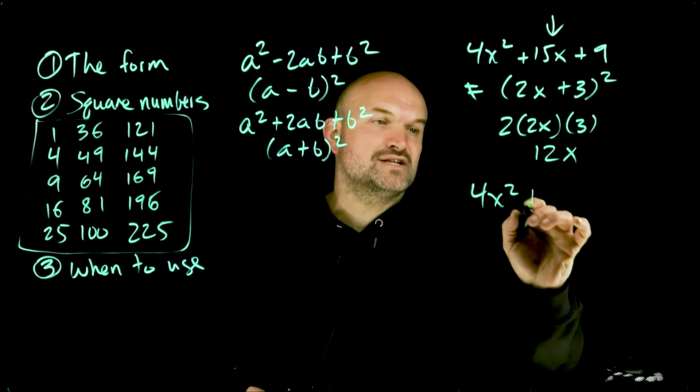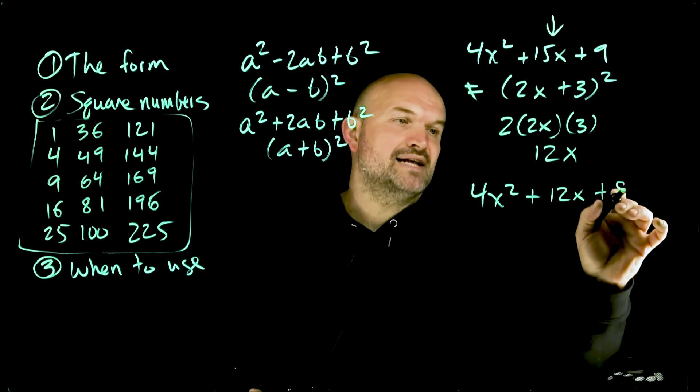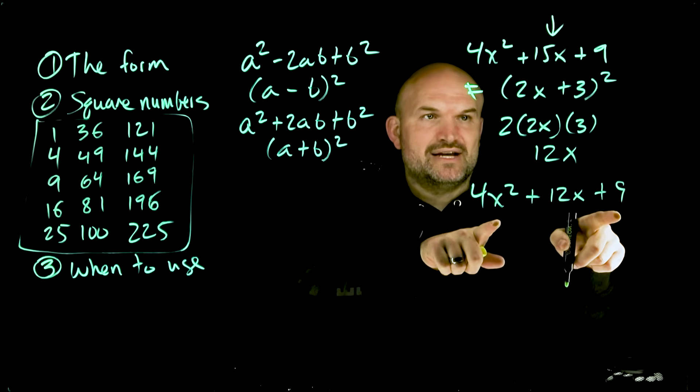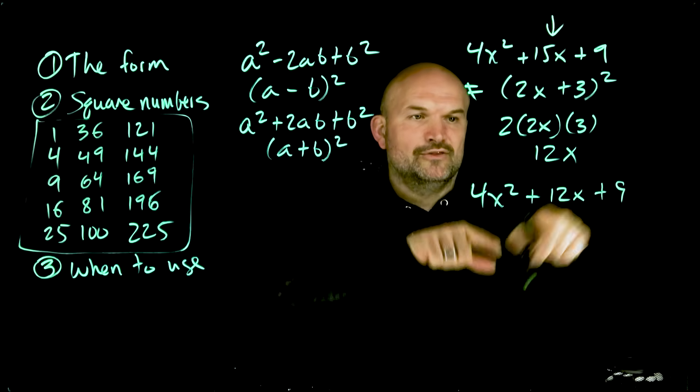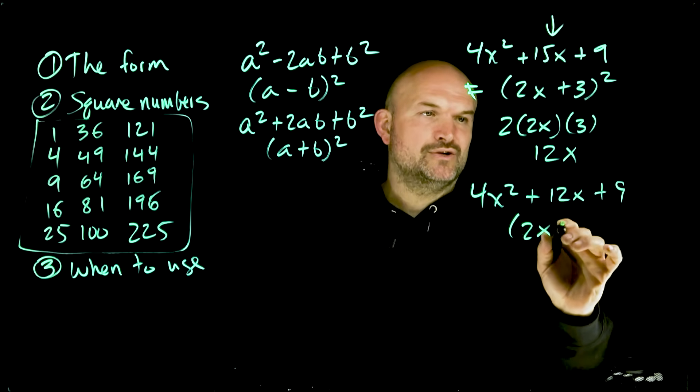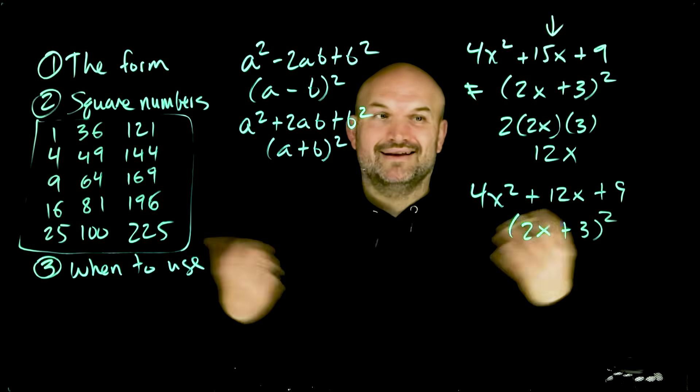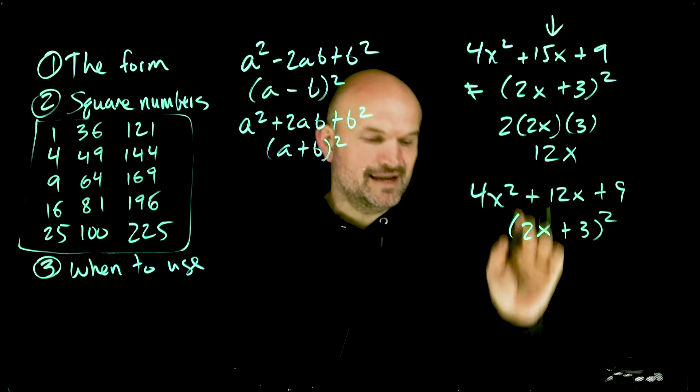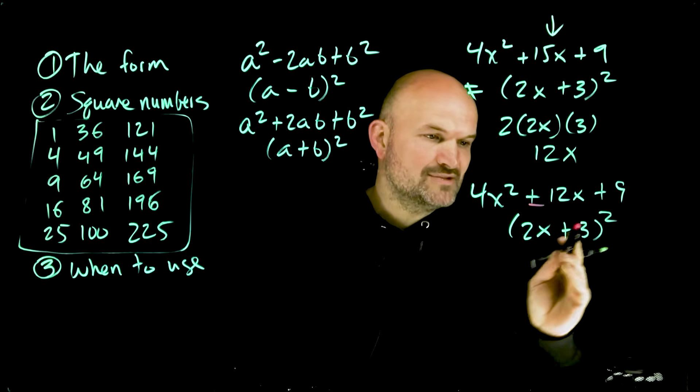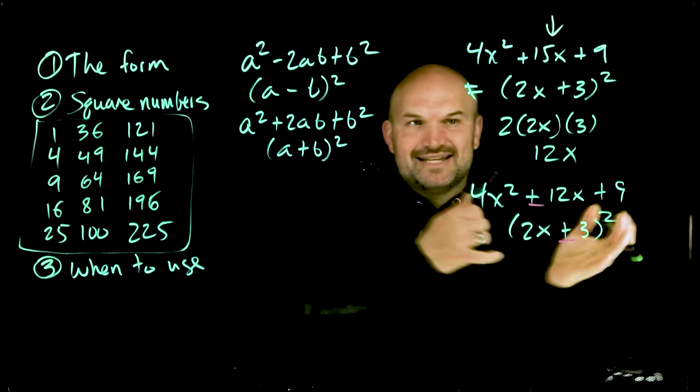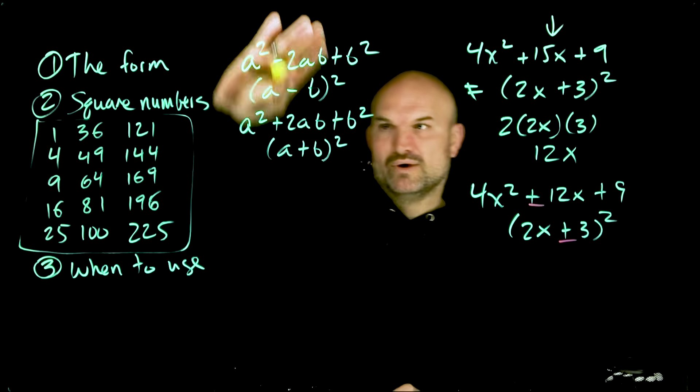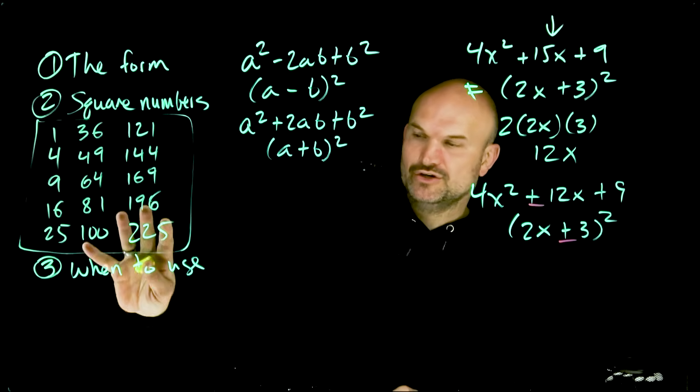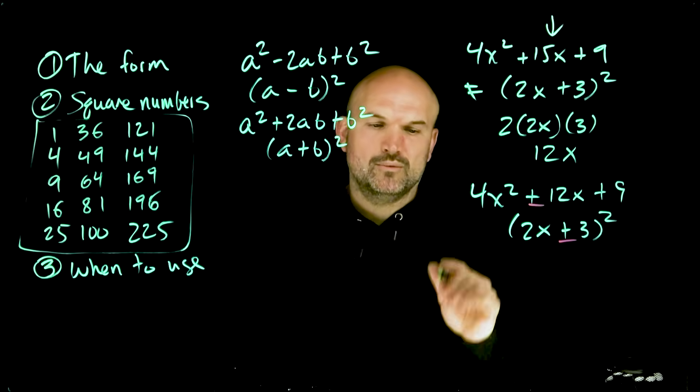Now if we did have 4x squared plus 12x plus 9, you could recognize, okay, 2 times 3 is 6, times 2 is 12—that works. Those are squared, yes—that's going to be 2x plus 3 quantity squared, done. And if you change that to a negative, if you make this a negative, then guess what? That's now going to be negative. Okay, so that's how that simply can work. Just make sure you understand the form, how to break it down, make sure you know your square numbers, and make sure you know when to use it.